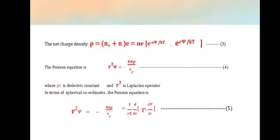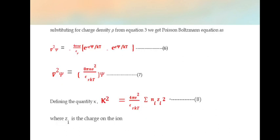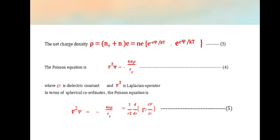In terms of spherical coordinates, the Poisson equation is written as ∇²ψ = -4πρ/εR = (1/R²)(d/dR)(R²·dψ/dR).